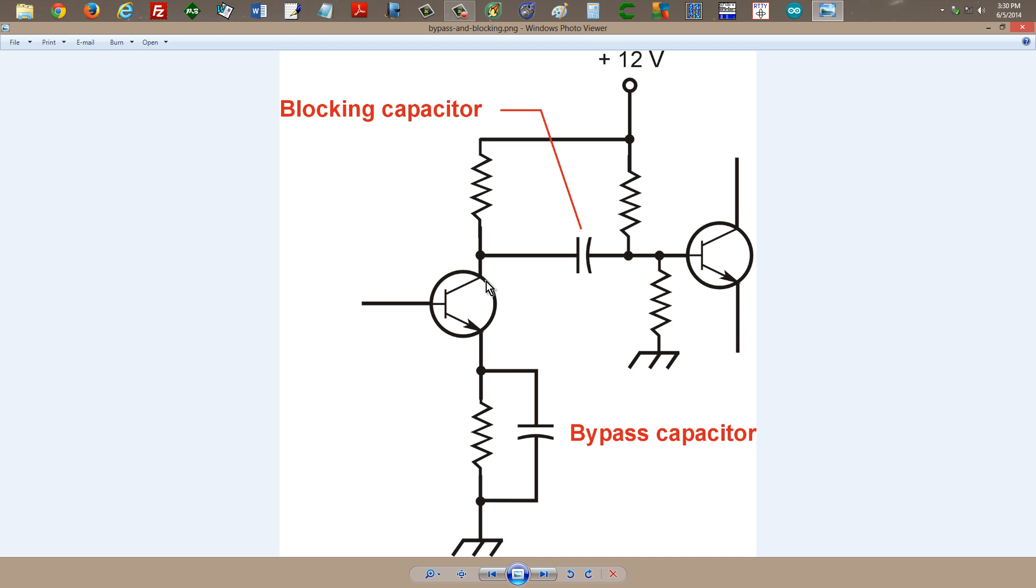So the signal can pass from the output of this stage here at the collector of this transistor through the capacitor onto the base of the second transistor easily. But direct current cannot flow through this capacitor at all.